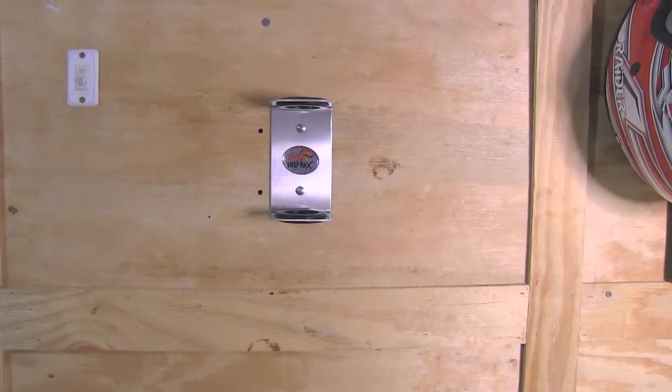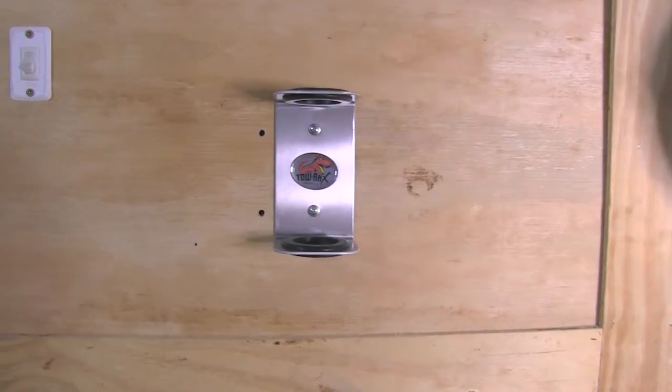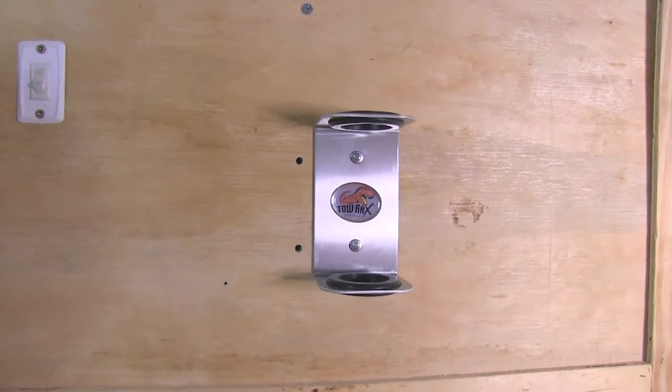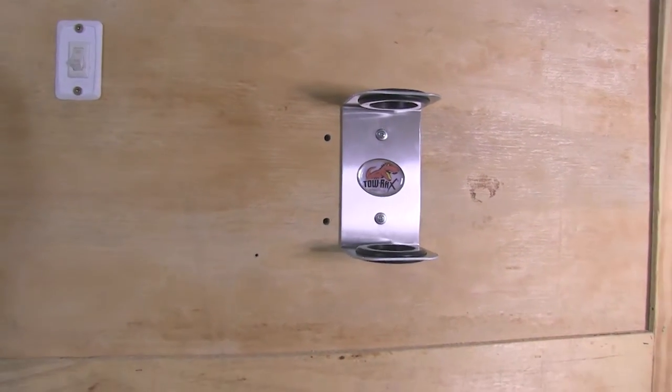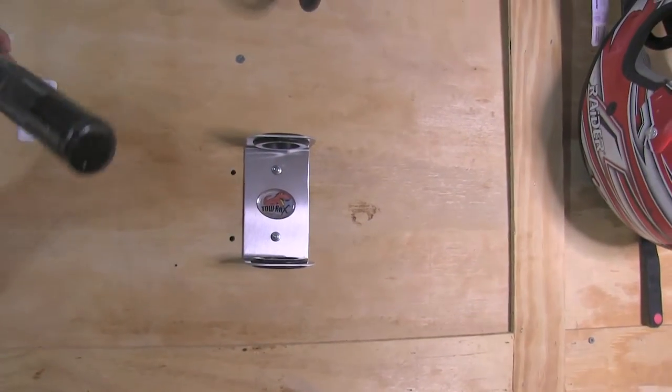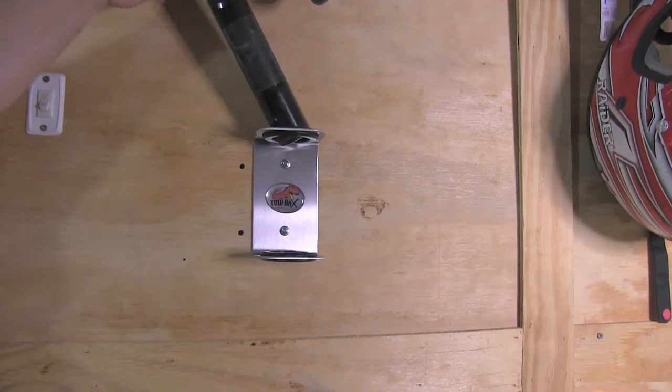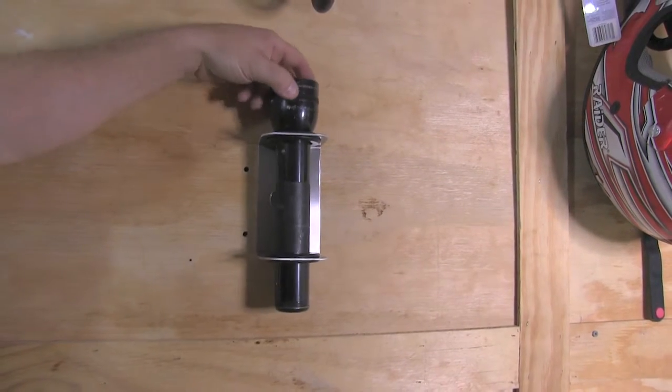Now with our screws in, we'll go ahead and show you what the flashlight looks like. Now this holder does fit a standard 2D cell flashlight. In this case we're using a metal style 2D cell flashlight—simply drops into place.